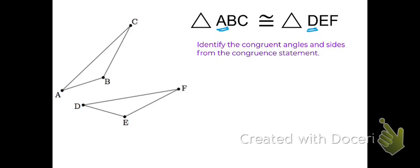So they correspond to one another. So angle A is congruent to angle D, and we can put our little tick marks in those angles.